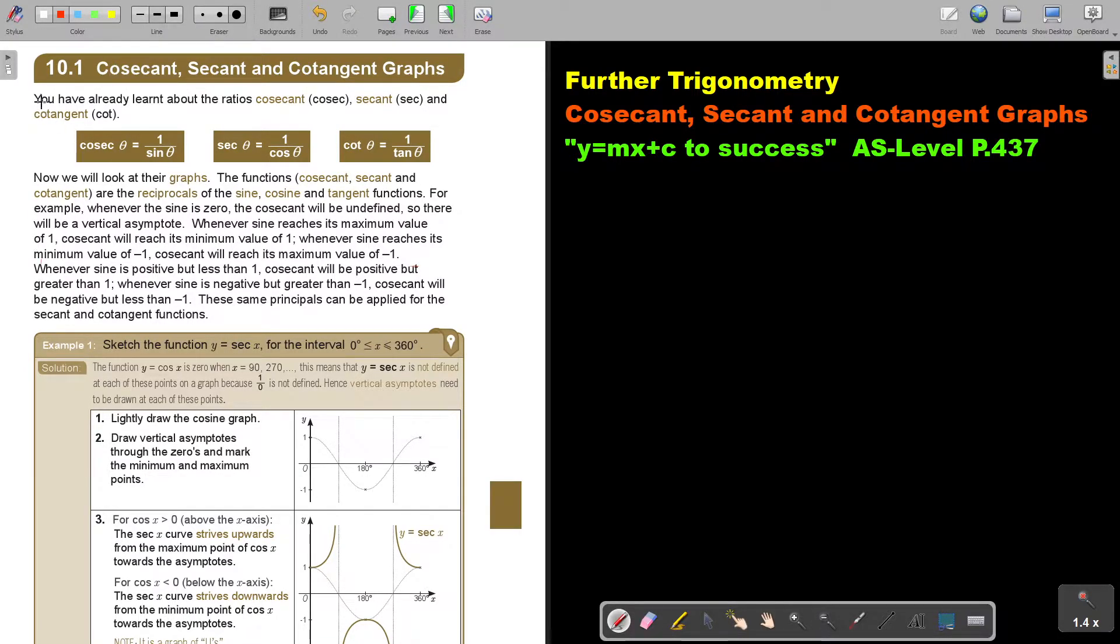Let's look at the cosecant, secant, and cotangent graphs. You have already learned about the ratios cosecant (cosec), secant (sec), and cotangent (cot) in chapter 4. Can you recall? Cosec was the third letter S, so it's 1 over sin θ. Sec, third letter is C, so it's 1 over cos θ. Cot, third letter T, so it's 1 over tan θ.